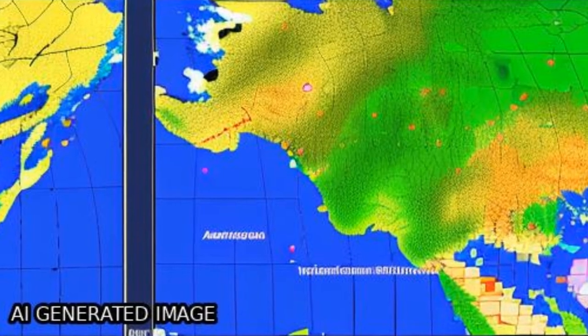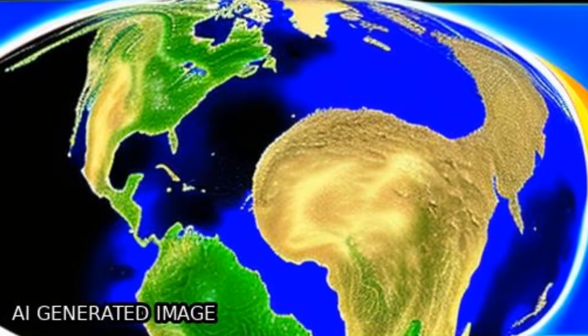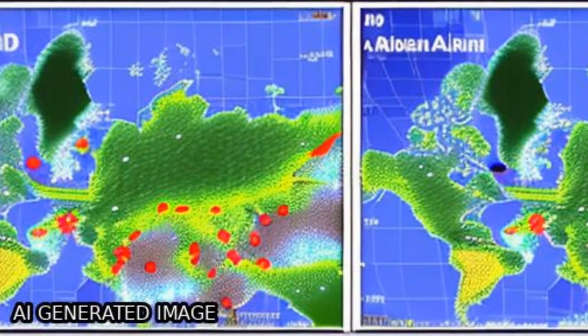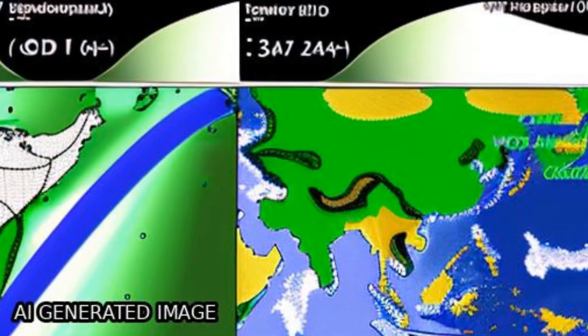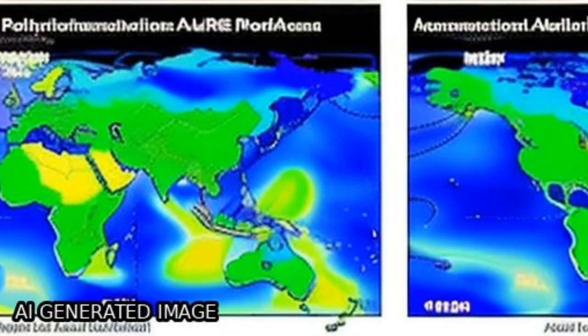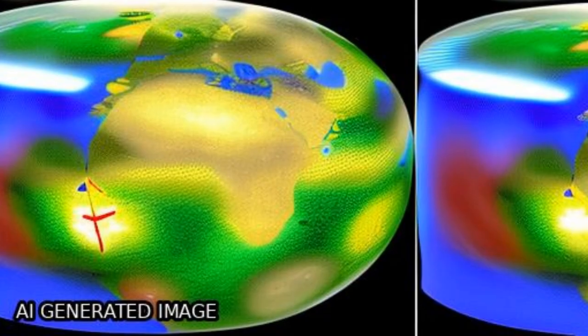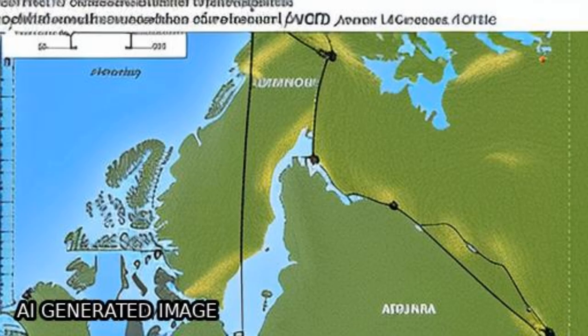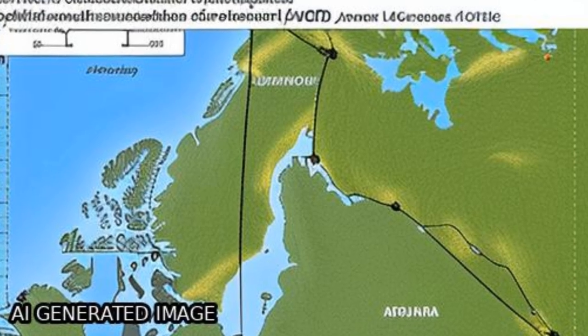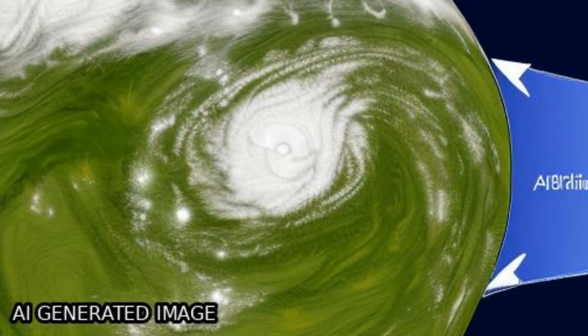The marginal improvement in the PM10 forecasts by the GEOS AOD suggests the non-negligible difference between column-representing AOD and the surface PM concentration.